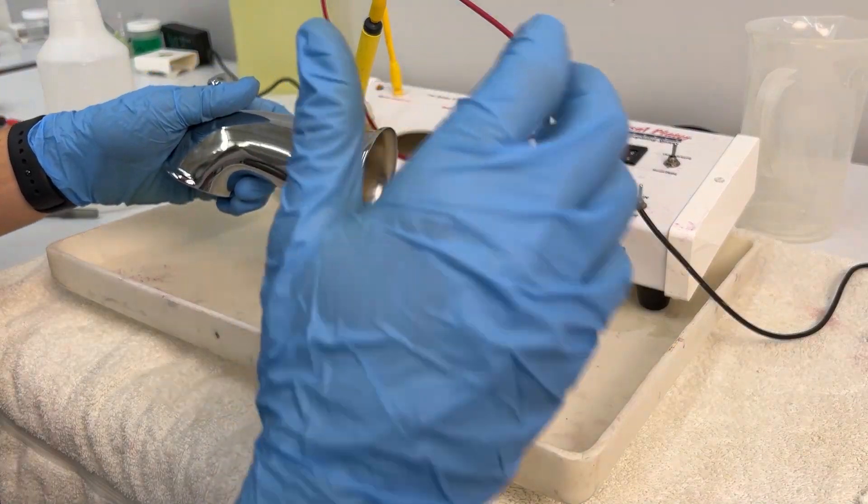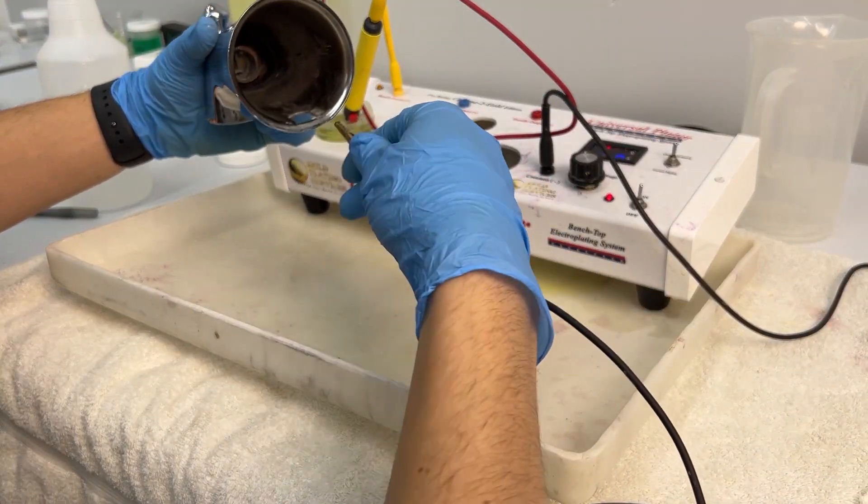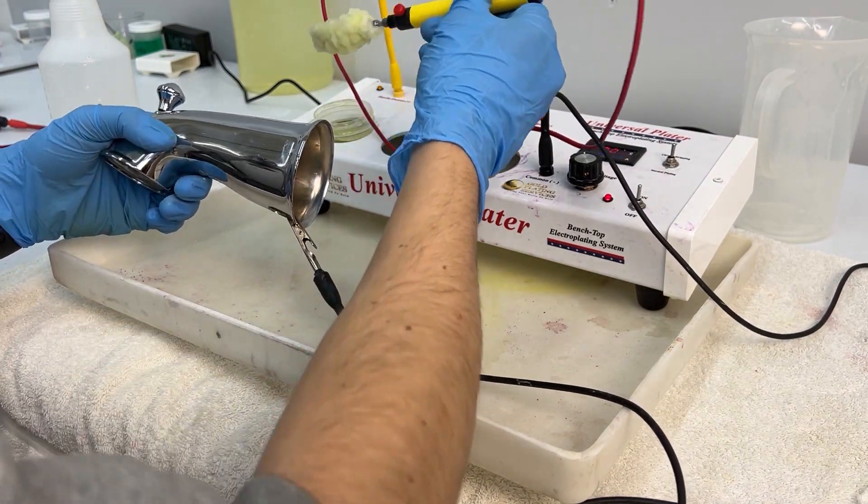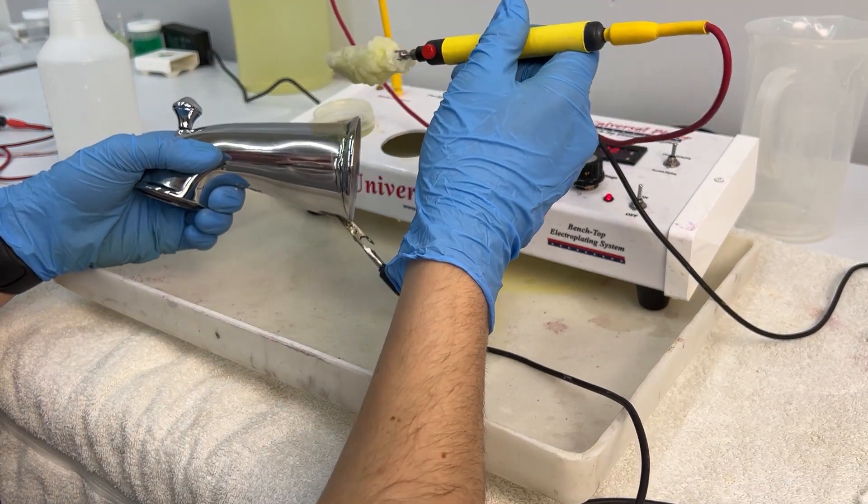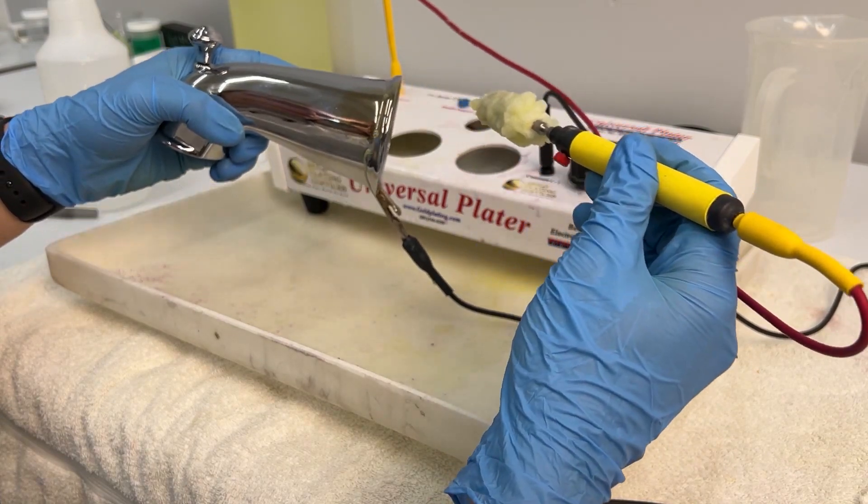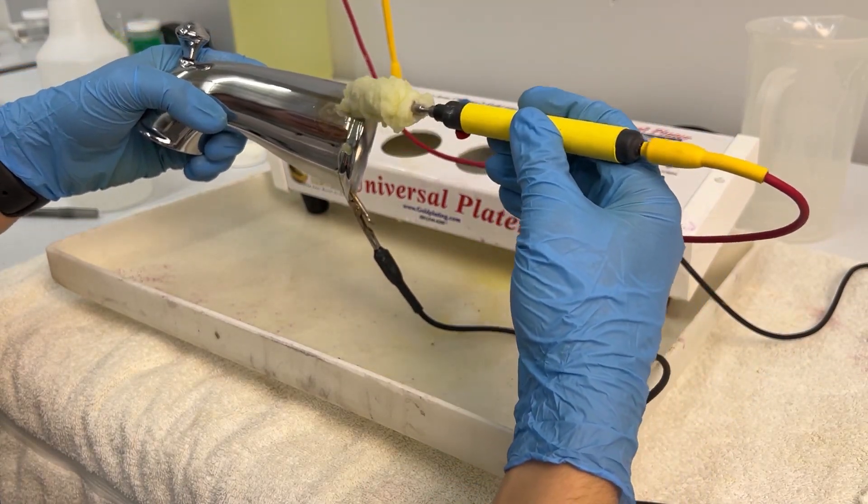Now we have an actual chrome part and to tell if something is chrome the sleeve will actually turn really yellow instead of a purple or a white and the piece will have a color change. You can see that nickel underneath this chrome.